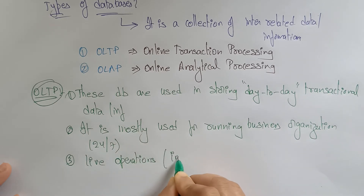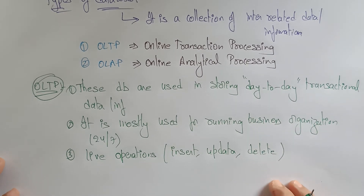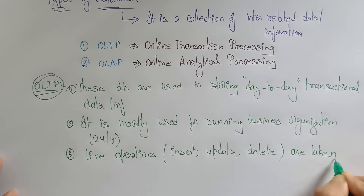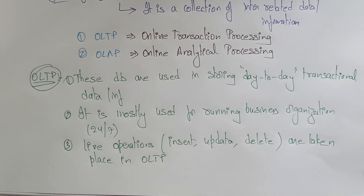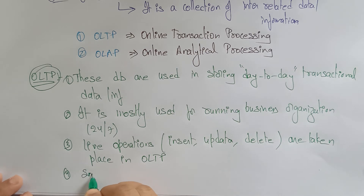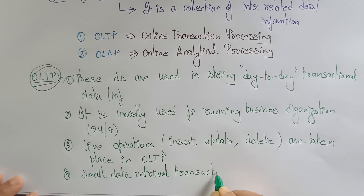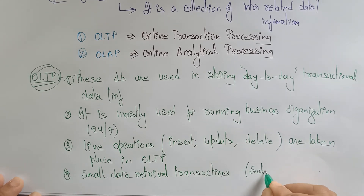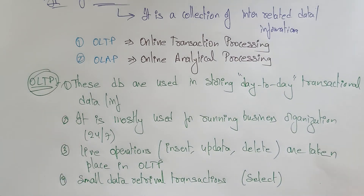Live operations — meaning inserting data, updating data, or deleting data — take place in OLTP, the Online Transaction Processing database. Small data retrieval transactions are also possible here. For example, in banking, if you want to see your last 10 transactions, you can view them. So insert, update, delete, and select — all these operations work in an OLTP database.